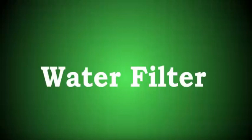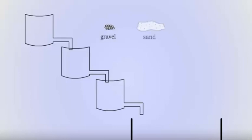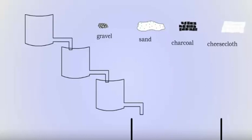Think about filters for databases and search engines along the lines of a water filter. To filter dirty or contaminated water, it goes through a series of processes. These processes can include items like gravel, sand, charcoal, and cheesecloth.